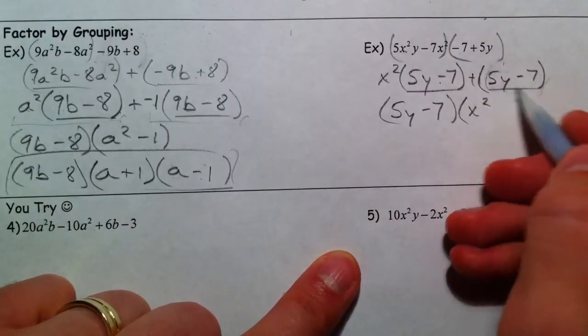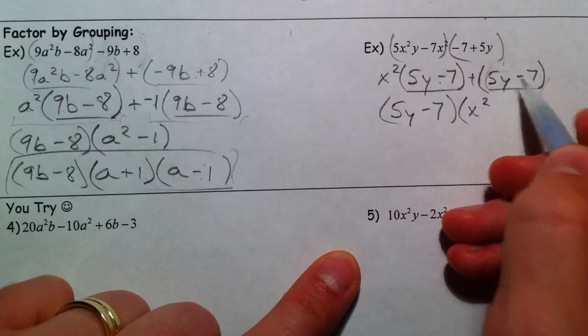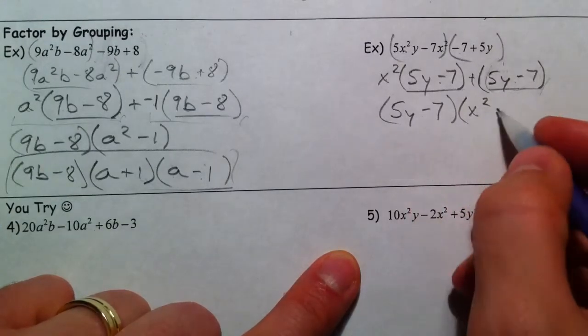And some people say, well, there's nothing left after I take it out. True, there's nothing left, but 5y minus 7 divided by this 5y minus 7 leaves a 1.